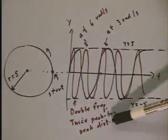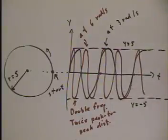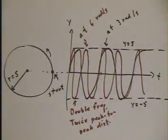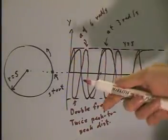So, by doubling the frequency, we get an error here. This says twice the peak-to-peak distance. It should say half the peak-to-peak distance.